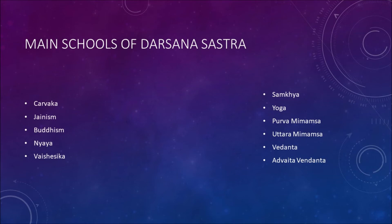Remember that Charvak, Jainism, Buddhism, Nyaya, Vaiseshika, Sankhya, Yoga, Purva Mimamsa, Uttara Mimamsa, Vedanta and Advaita Vedanta are the important schools of our Indian philosophy. Prior to Charvak, you have got Vedas, then Upanishads, and Puranas along with Sapuranas are also there.